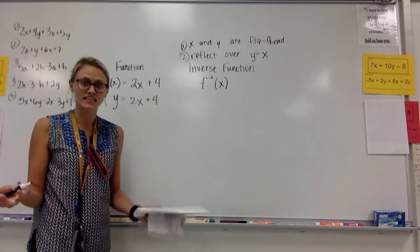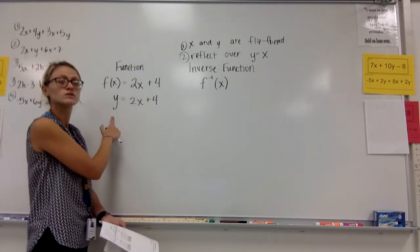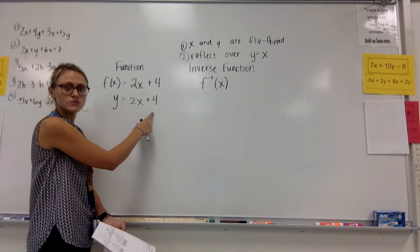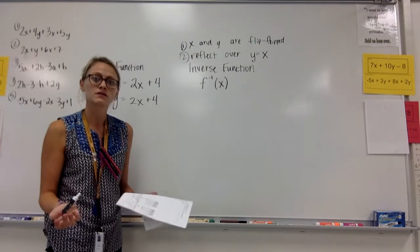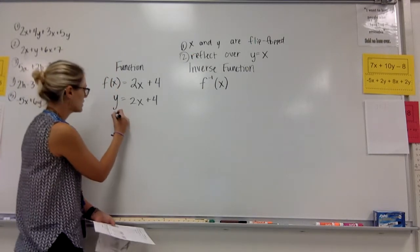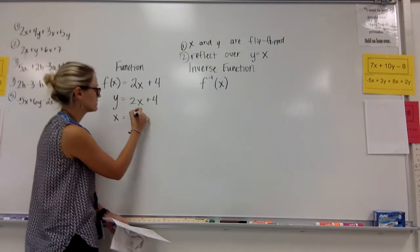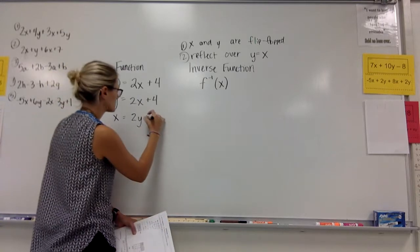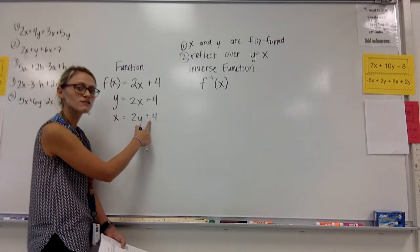Okay, so how do we find the inverse function? Well, I've got my f of x is 2x plus 4, which I also know is y equals 2x plus 4. Like I said earlier, x and y are flip-flopped. So I'm going to rewrite this, and instead of a y, I'm going to have x. And instead of an x, I'm going to have a y.